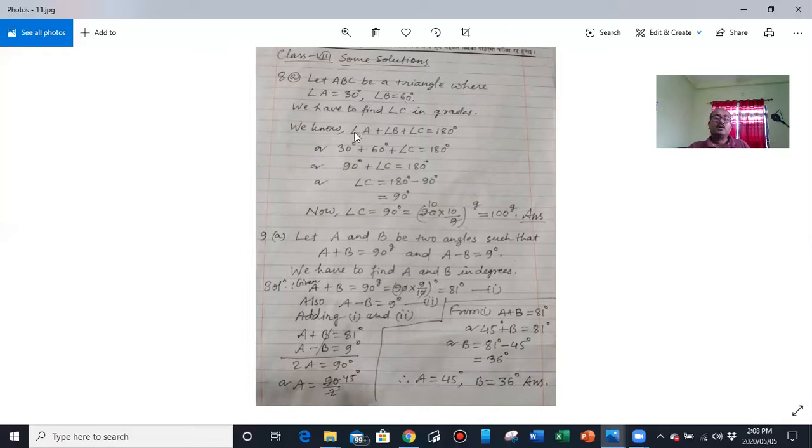But two angles are given in degree, so we will start our work in degree. We know in any triangle, sum of three angles is 180 degree. See the mouse. Sum of angle A, angle B, and angle C is equal to 180 degree. In the next line, put value of angle A is 30 degree, value of angle B is 60 degree. And angle C, we don't know, sum of three angles is 180 degree. Now 30 plus 60 is 90, so 90 plus angle C is 180 degree. So angle C will be 180 minus 90, it will be 90 degree.